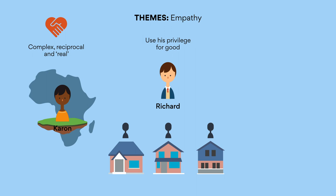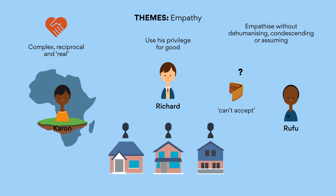This can challenge him — and us — in our assumptions about what is right. When Richard loses his wallet at the store, Rufu offers to pay for him. He initially insists he can't accept, but when he does, Rufu doesn't let him pay back in full. Erpenbeck challenges us to empathize without dehumanizing, condescending, or assuming anything in the process. It's an interesting way to think about social justice in general, particularly if you consider yourself an ally of a marginalized group. How can we talk with people rather than speak for them about what they want?